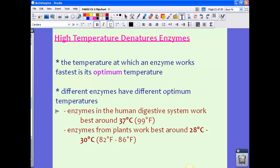Now enzymes from plants might work best around 28 degrees Celsius to 30 degrees Celsius, or about 82 to 86 degrees Fahrenheit. So depending upon the type of enzyme, this will determine the optimum temperature for that particular enzyme. So don't think that all enzymes work best at the same temperature. It depends upon the type of enzyme in the environment that it works best at will determine the type or the temperature, its optimum temperature that it's going to work best at.